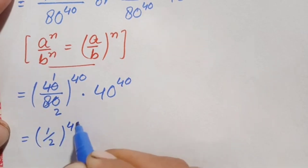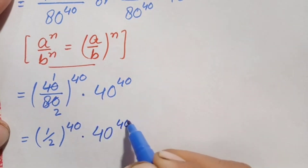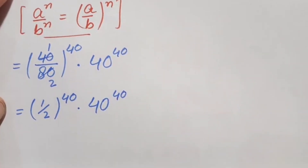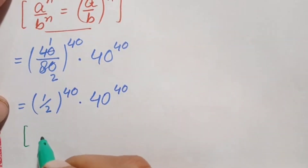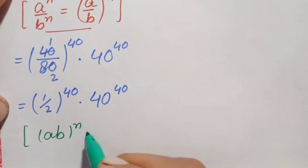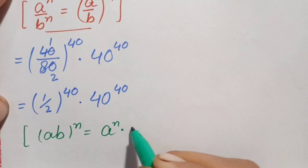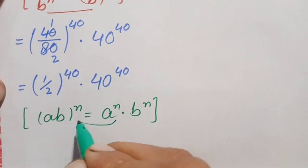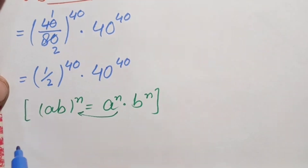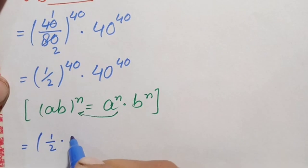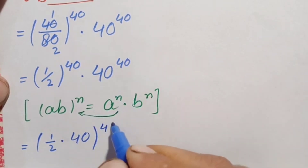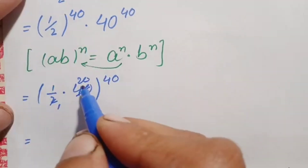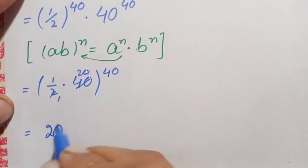Both numbers now have the same power 40, so we apply the identity: a times b whole raised to power n equals a raised to power n times b raised to power n. Combining the bases: (1/2) times 40 whole raised to power 40. Simplifying: 2 times 20 is 40, so 1/2 times 40 equals 20, giving us 20 raised to power 40.